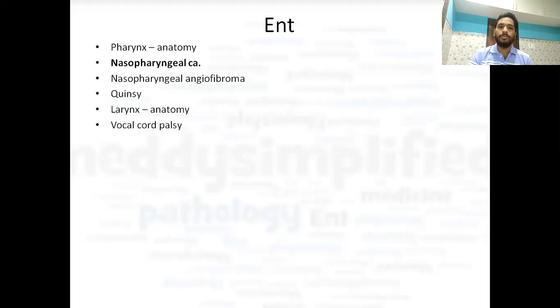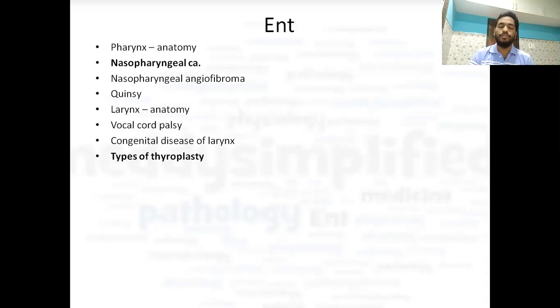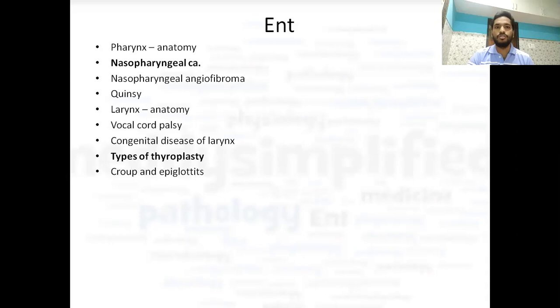Then PNC. After PNC, laryngeal anatomy and vocal cord palsy or paralysis. Benign disease of larynx. Types of thyroplasty — type 1, 2, 3, 4 — what does each do: medialization, lateralization, shortening, lengthening, and in which disease we use them. Then PNC and epiglottitis — acute laryngotracheobronchitis. Signs are very important in PNC, and epiglottitis signs are also important and have been asked in exams.